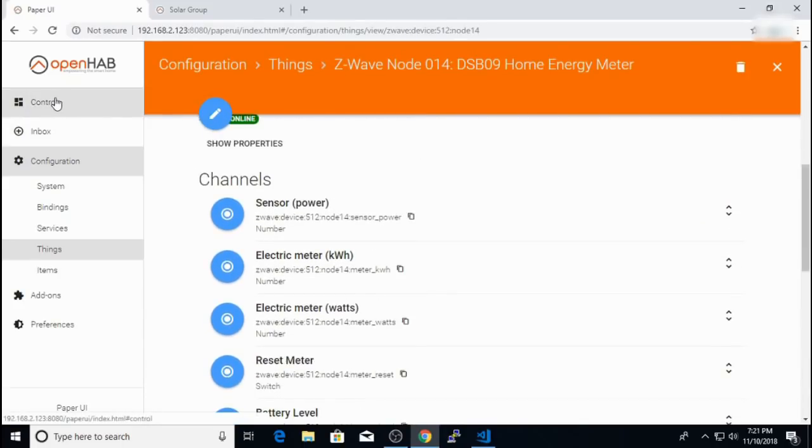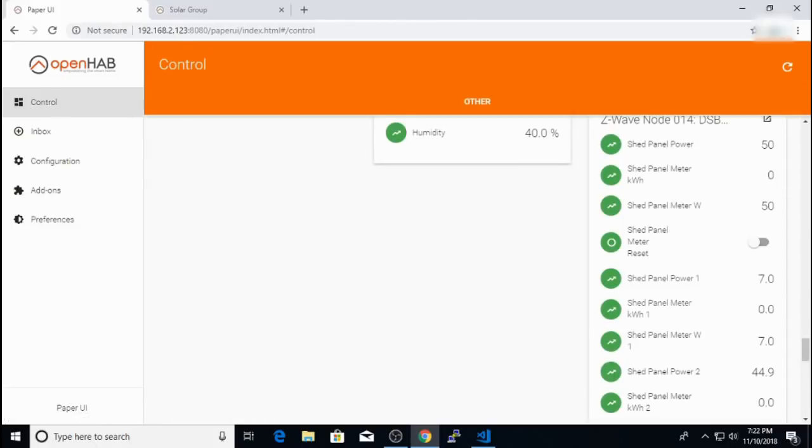And when I go into control tab, I'm starting to see some numbers updating from the switch. So right now it looks like the lights or other devices on that power panel are using a total of 50 watts. So I'll probably create charts from these values once I have more readings and see how much power some of the devices I use in the shed are actually using.